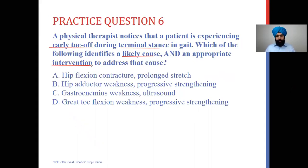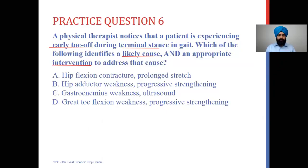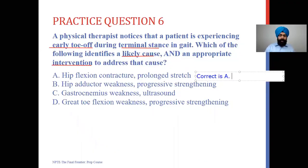You're given the problem which is early toe-off, and we have to find the cause and the intervention. Your options are: A — hip flexion contracture and prolonged stretch as an intervention; B — hip adductor weakness and progressive strengthening; C — gastrocnemius weakness and ultrasound as an intervention; and D — great toe flexion weakness and progressive strengthening. The correct answer listed is A, so let's talk about why.